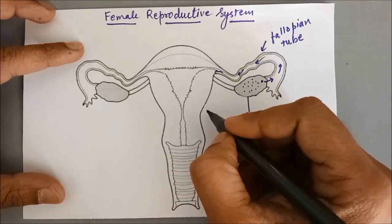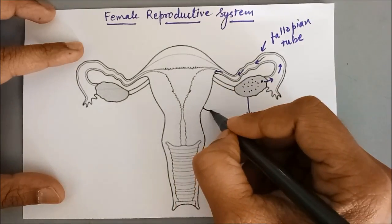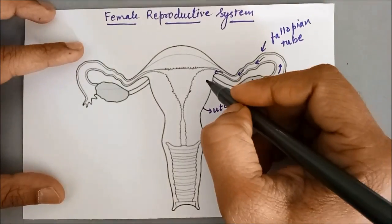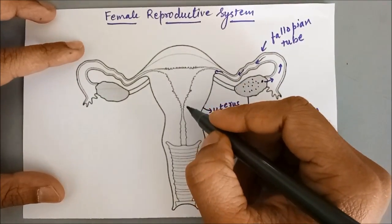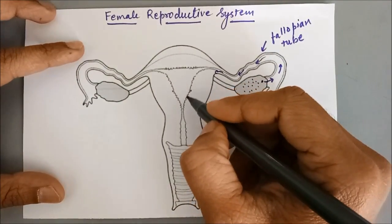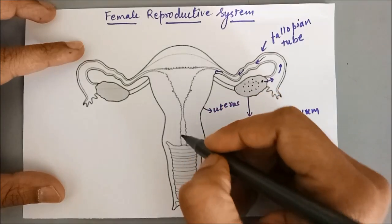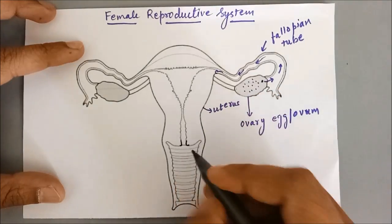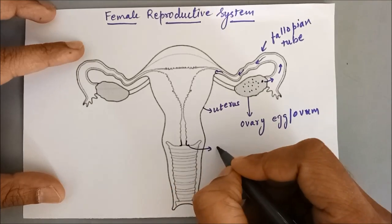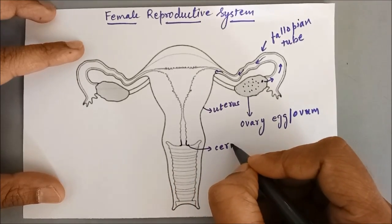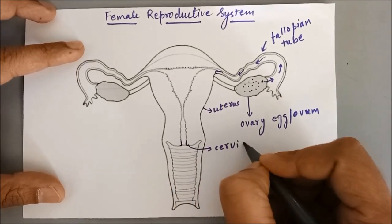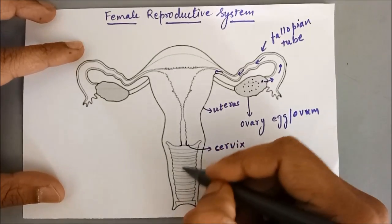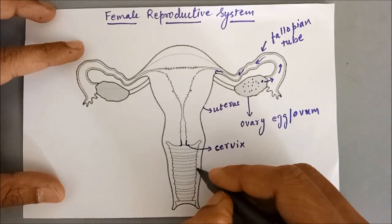So this muscular chamber is the uterus. This muscular chamber ends over here, and this end portion of the uterus is called the cervix. The cervix opens into a long hollow tube called the vagina.